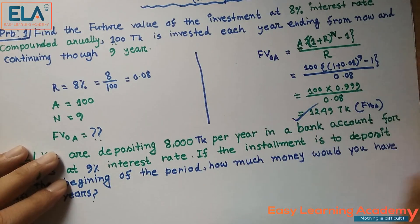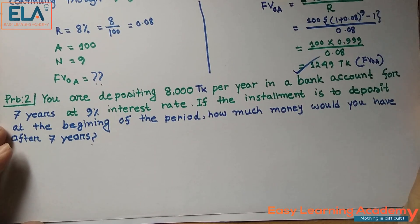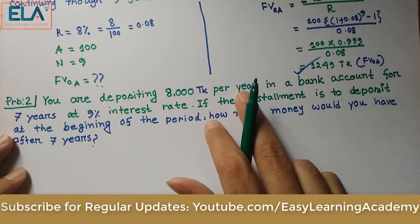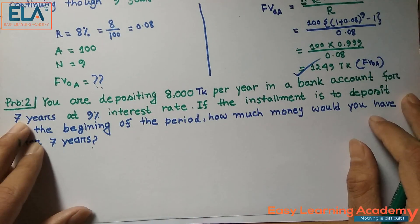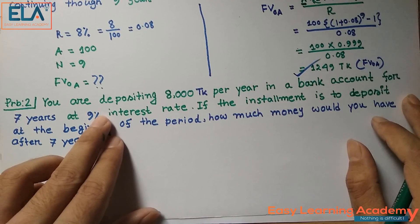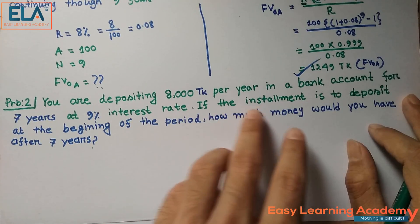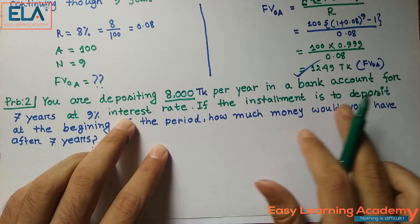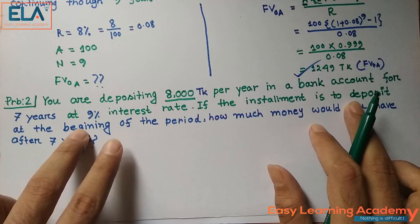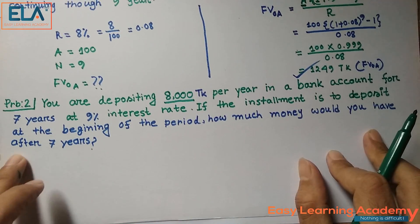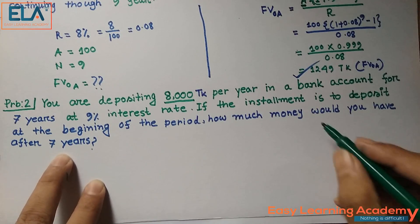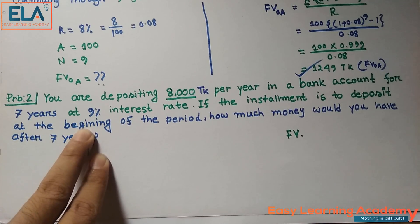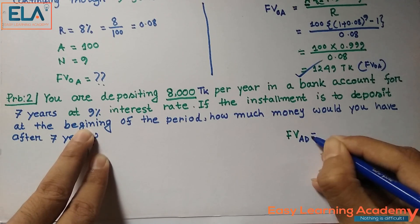Now let's solve the second problem. You are depositing 8,000 taka in a bank account for seven years at a 9% interest rate. If the installment is deposited at the beginning of the period — that is, annuity due — how much money would you have after seven years? We need to find the future value of annuity due.